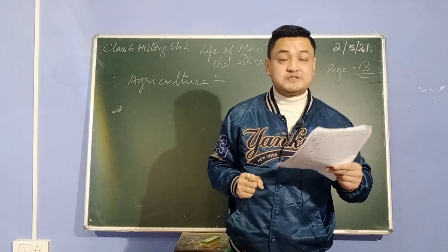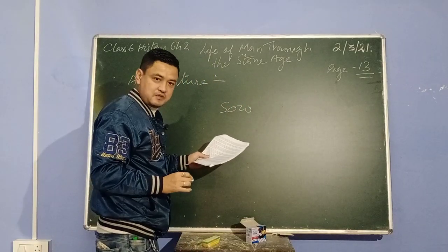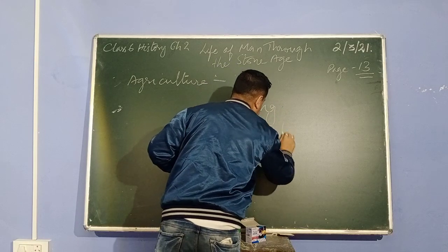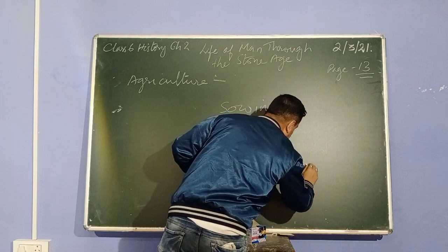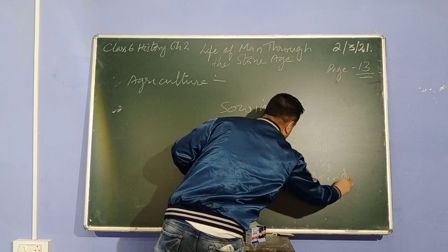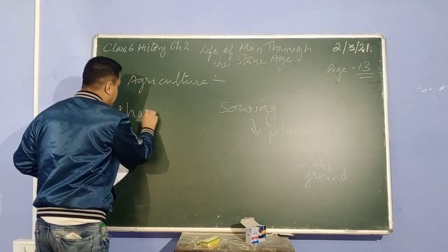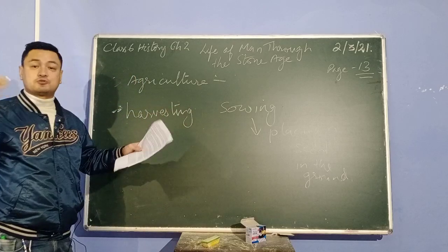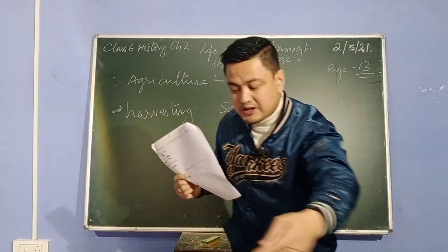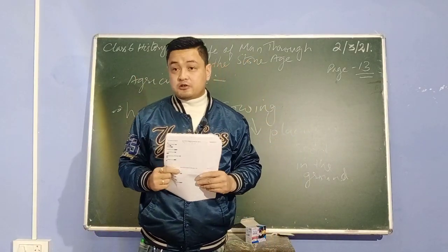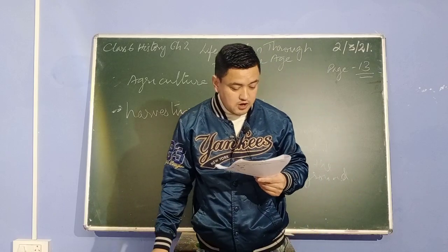From the sowing of seeds to the harvesting of crops — sowing means placing a seed inside the ground by digging. Harvesting means, after the crop has grown and is ready to be eaten, you gather the crops. This gathering is known as harvesting.